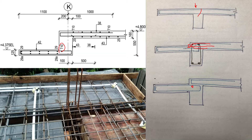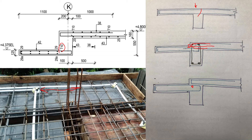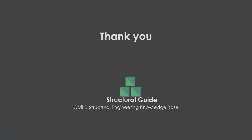You should always provide the top reinforcement at cantilevers. However, in some cases as seen in the figure, the top reinforcement is not properly provided — the spacing between top bars is very high, and no tension bar is provided for the cantilever portion. These kinds of issues can even lead to failure of the structure. Therefore, when doing cantilever reinforcement detailing, not only must the detailing be done correctly, but we also have to make sure the construction is carried out according to the issued drawings.